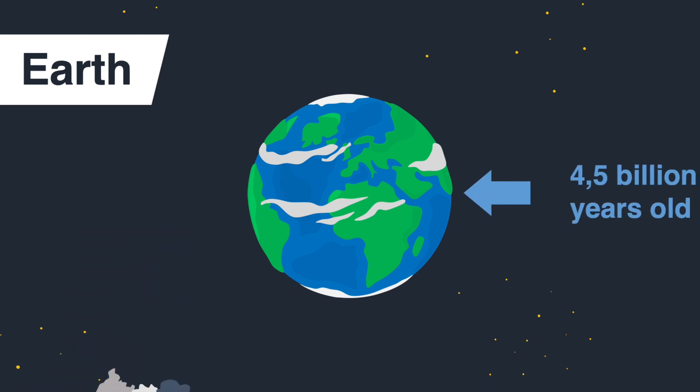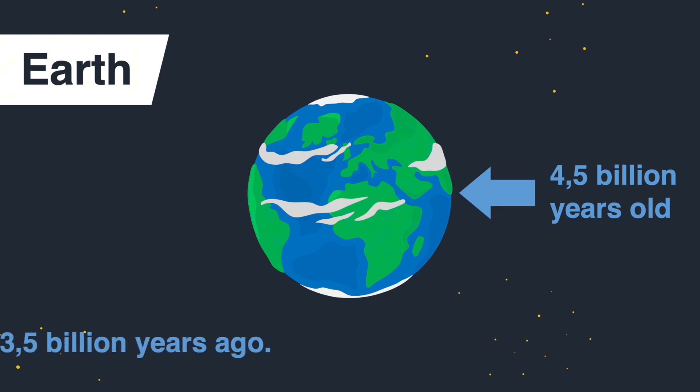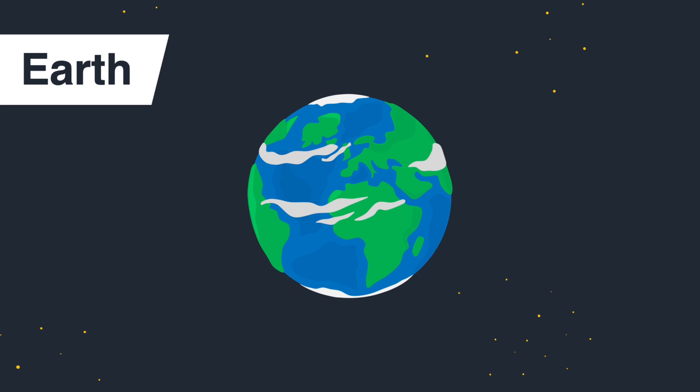Did you know that our planet is around 4.5 billion years old like the entire solar system, and life developed only 1 billion years later?